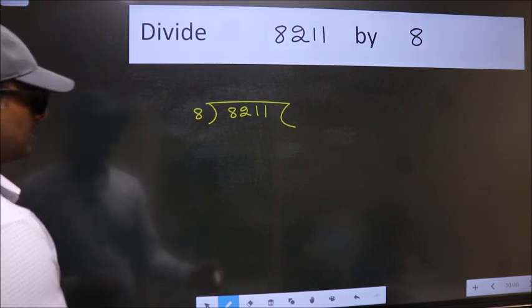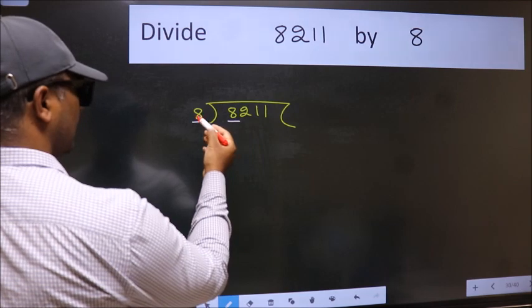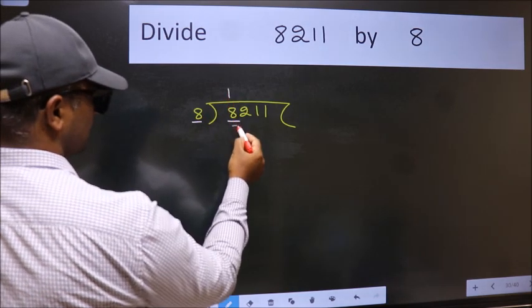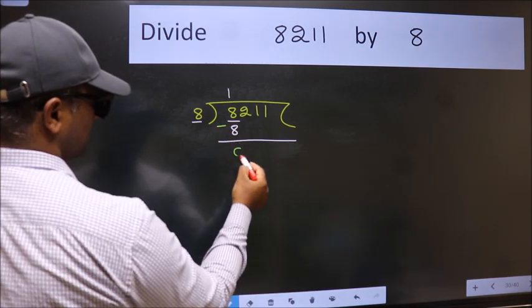This is your step 1. Next, here we have 8 and here 8. When do we get 8 in 8 table? 8 once, 8. Now, we should subtract. We get 0.